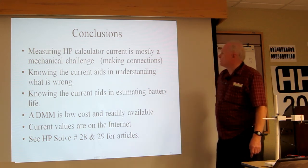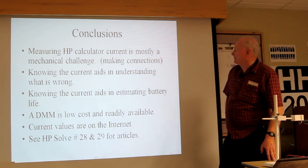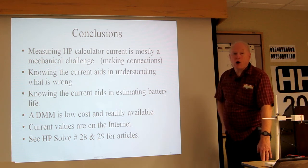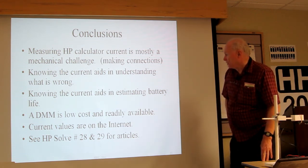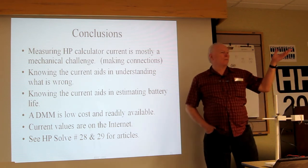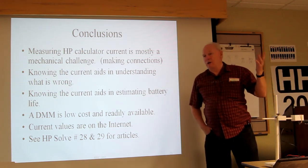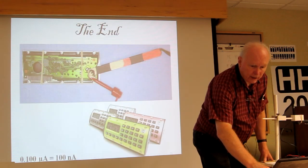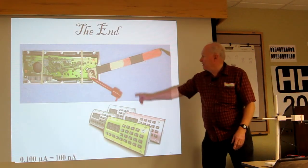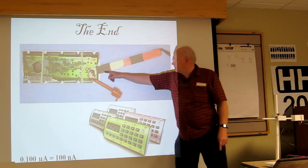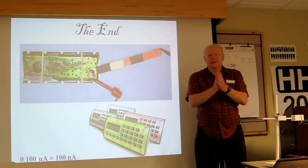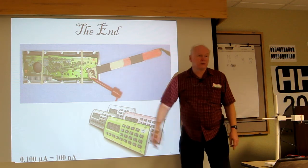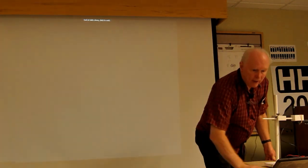Conclusions. Measuring HP calculator current is mostly a mechanical challenge. Knowing the current aids in understanding. You can estimate battery life. The digital multimeter is really low cost, so it's well worthwhile for you to play along. Current values are on the internet. You go on the internet, find out what model you've got. Somebody has made some measurements, and you can get some idea. The HP solve issues will have that information. I used a popsicle stick. On the back side, I took wire and flattened it out. This was heat shrink tubing, so this wire makes the connection on the bottom, and the hook wire makes it here.